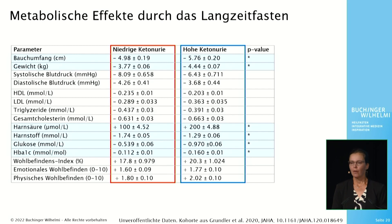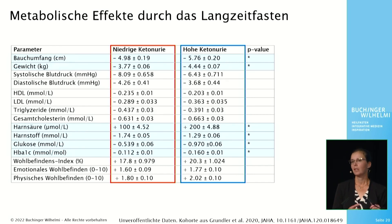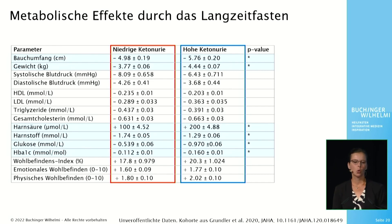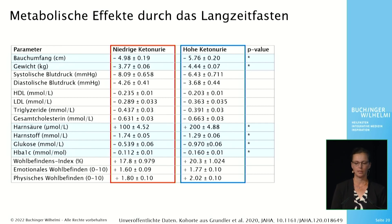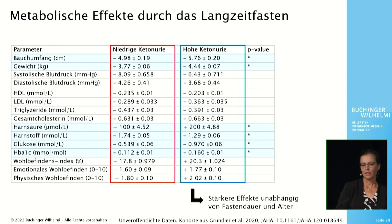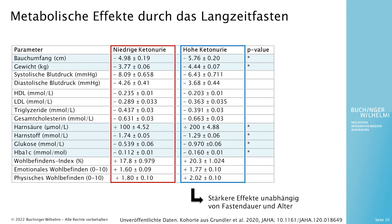The question now is whether long-term fasting has different effects in the two groups. We have indeed found differences: a greater reduction in abdominal circumference and weight was observed with high ketonuria. Uric acid increased more, whereas urea was reduced less. In addition, glucose and glycated hemoglobin levels were reduced to a greater extent. Overall, the metabolic effects of fasting appear to be more pronounced in the high ketonuria group, independent of fasting length and age.